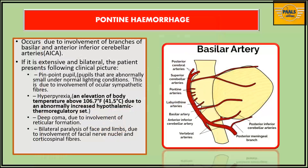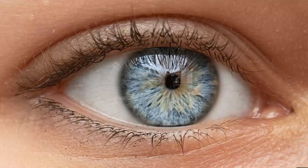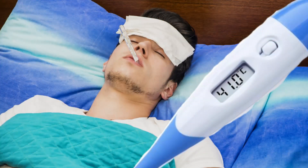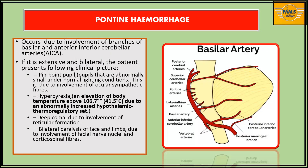Lastly, pontine hemorrhage occurs due to involvement of branches of the basilar and anterior inferior cerebellar arteries. If extensive and bilateral, the patient presents with: pinpoint pupils (abnormally small under normal light) due to involvement of ocular sympathetic fibers; hyperpyrexia with elevation of body temperature above 106.7°F due to abnormally increased hypothalamic thermoregulatory activity; deep coma due to involvement of the reticular formation; and bilateral paralysis of face and limbs due to involvement of facial nerve nuclei and corticospinal fibers.